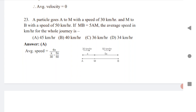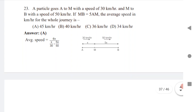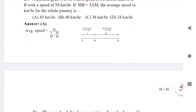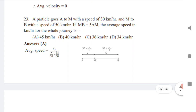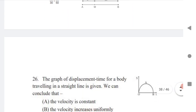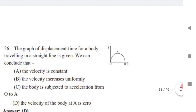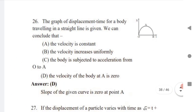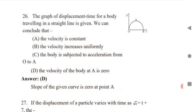Next is question 23. A particle goes from A to M with a speed of 30 km/h and M to B with a speed of 50 km/h, where MB = 5·AM. To find the average speed, take the first displacement as x and the second as 5x, giving total displacement 6x. Using distance divided by time, you can substitute and get the answer.